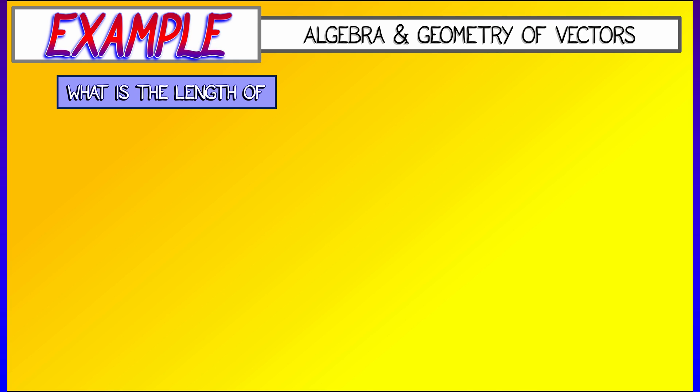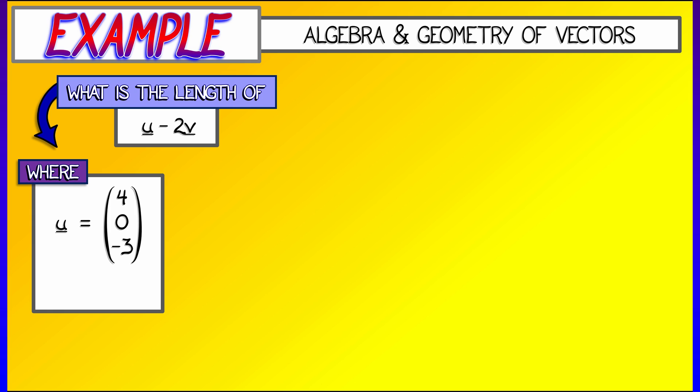All right, let's practice a bit more. What is the length of the vector sum u minus 2 times v, where u is given as the vector 4, 0, negative 3, that is 4i minus 3k. And v is given as the vector 1, 1, negative 2, that is i plus j minus 2k.